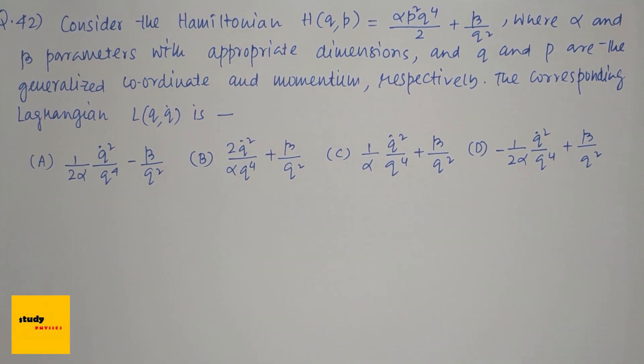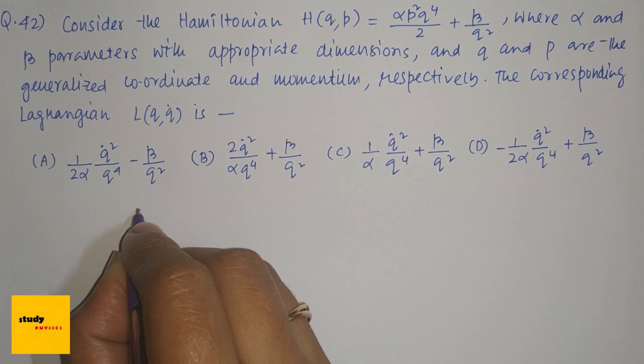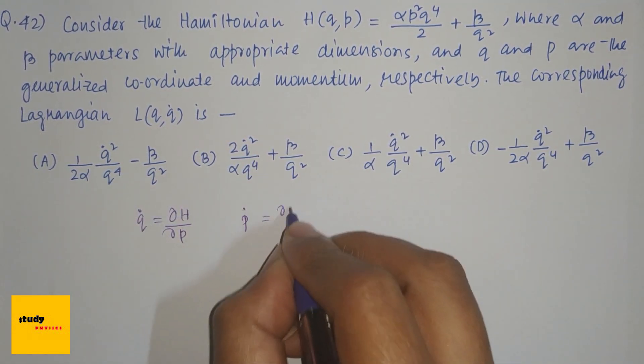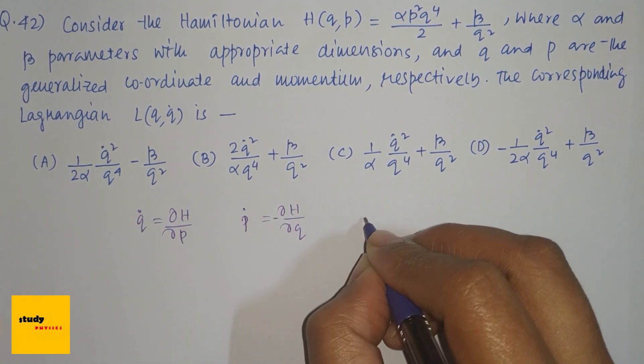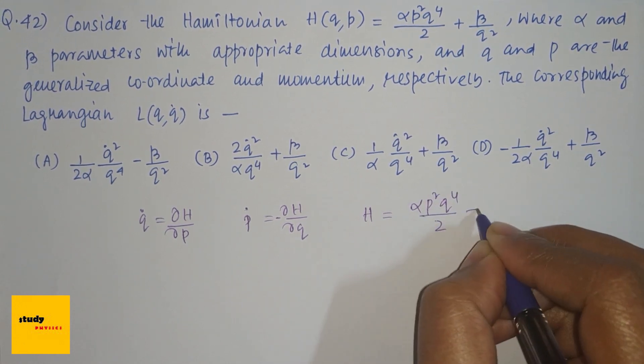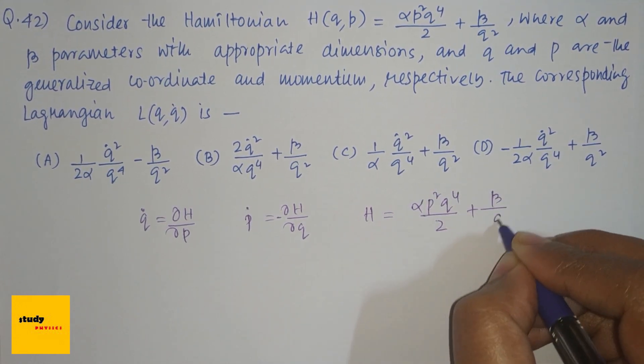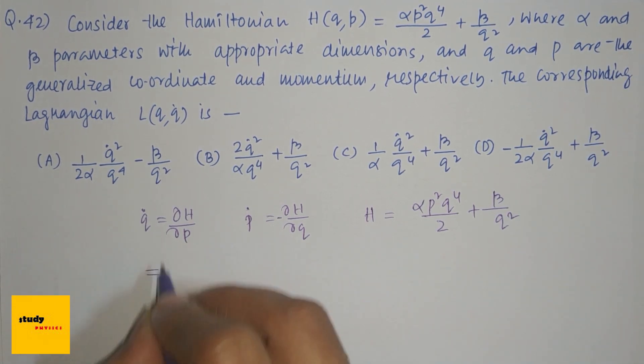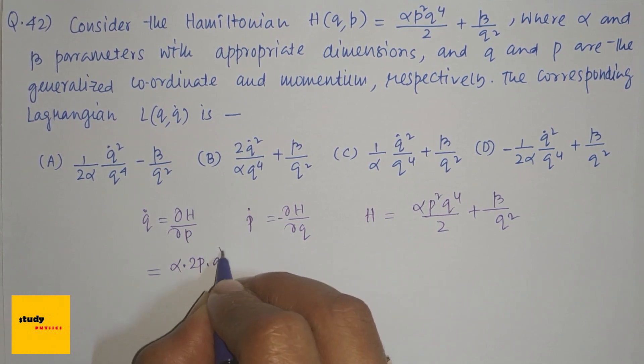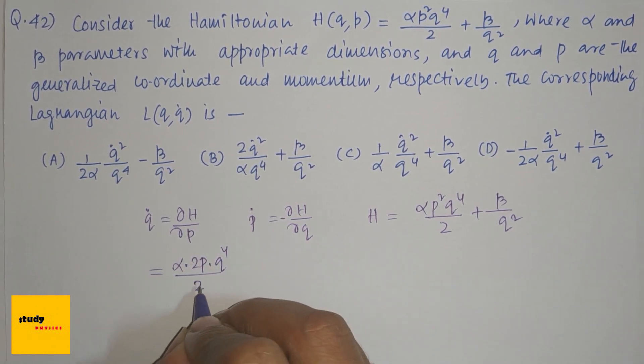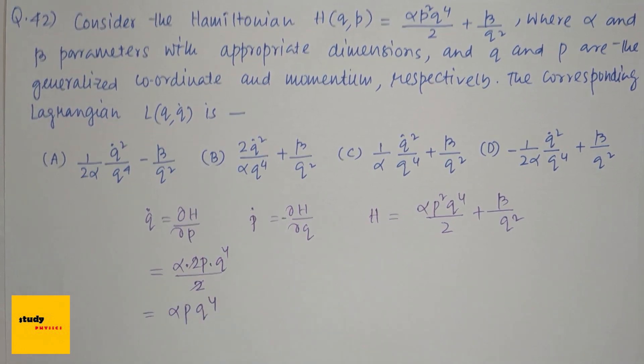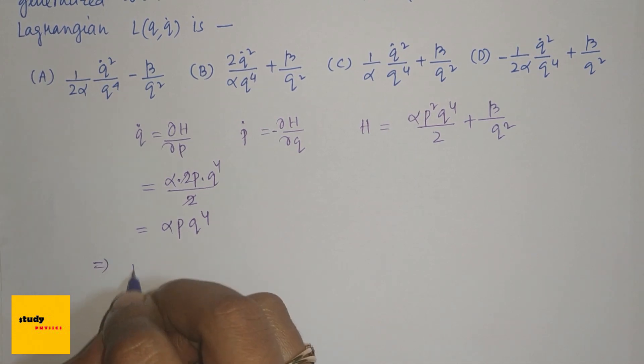From the Hamiltonian canonical equations, we know that q̇ = ∂H/∂p and ṗ = -∂H/∂q. Here, the Hamiltonian is H = αp²q⁴/2 + β/q². So, q̇ = ∂H/∂p = α·2p·q⁴/2. Therefore, q̇ = αpq⁴.